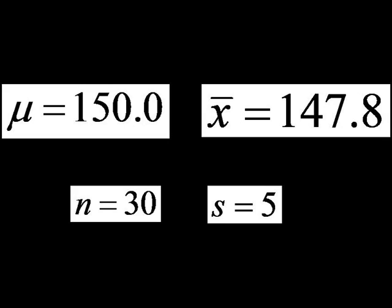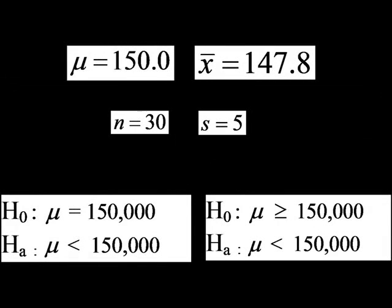Since you believe the real value for all members is less than 150 minutes, and you want to provide evidence to show that it's less than 150 minutes, your hypothesis will look like this. I've shown two different setups here, because different textbooks have different ways of presenting this topic. However, the only really important part is the alternative hypothesis, so always keep that in mind.